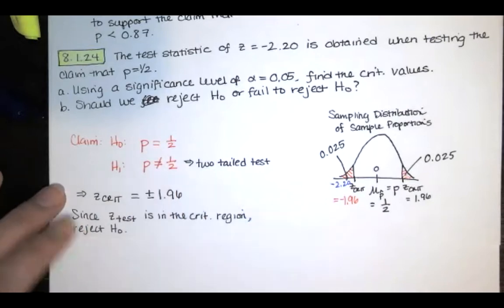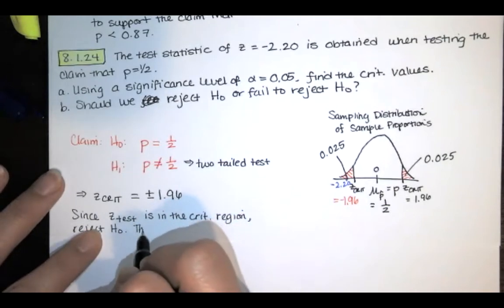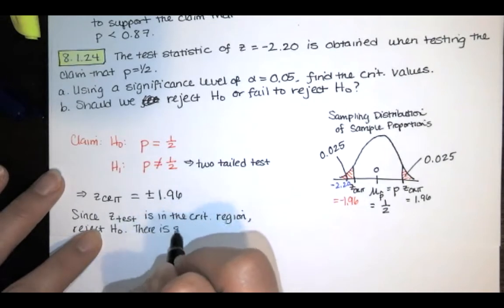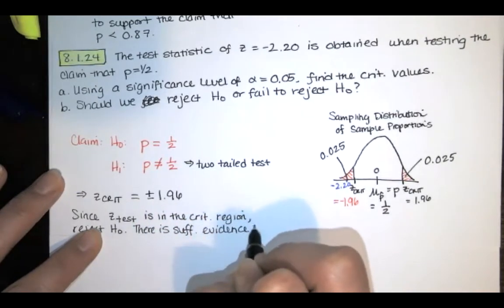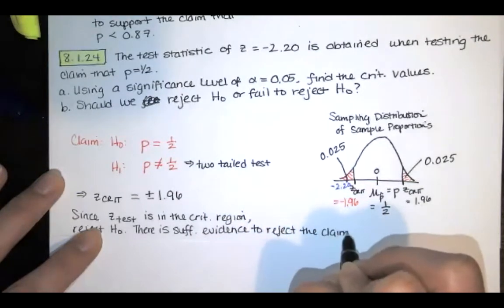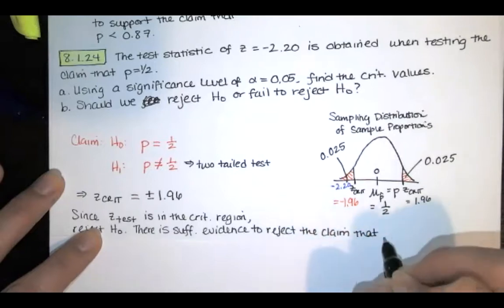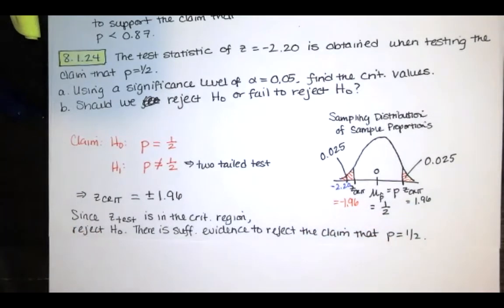And in that case, since our claim happened to be the same as the null hypothesis, we're rejecting the claim. So we'll say that there is sufficient evidence to reject the claim that the true population proportion is equal to one half. Let's go back to our homework and see what options they give us.